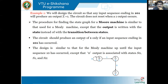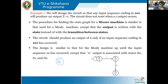The circuit should produce an output of one only if an input sequence ending in 1, 0, 1 has occurred. The design is similar to that of the Mealy machine. We will consider the initial state S0. Zero output is associated with states S0, S1, and S2.